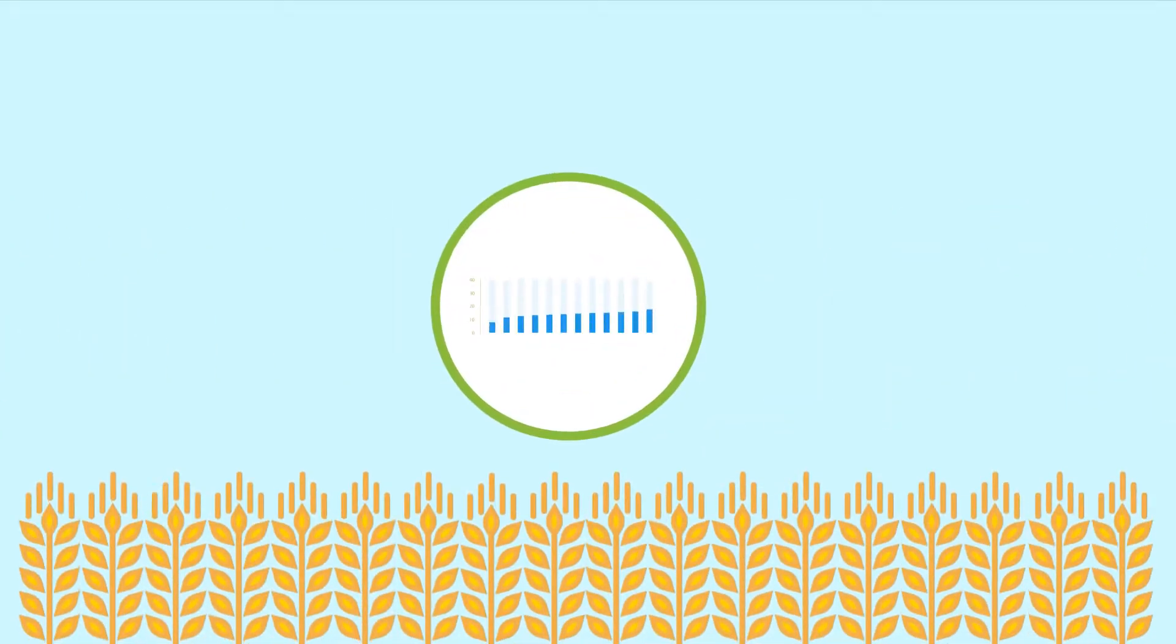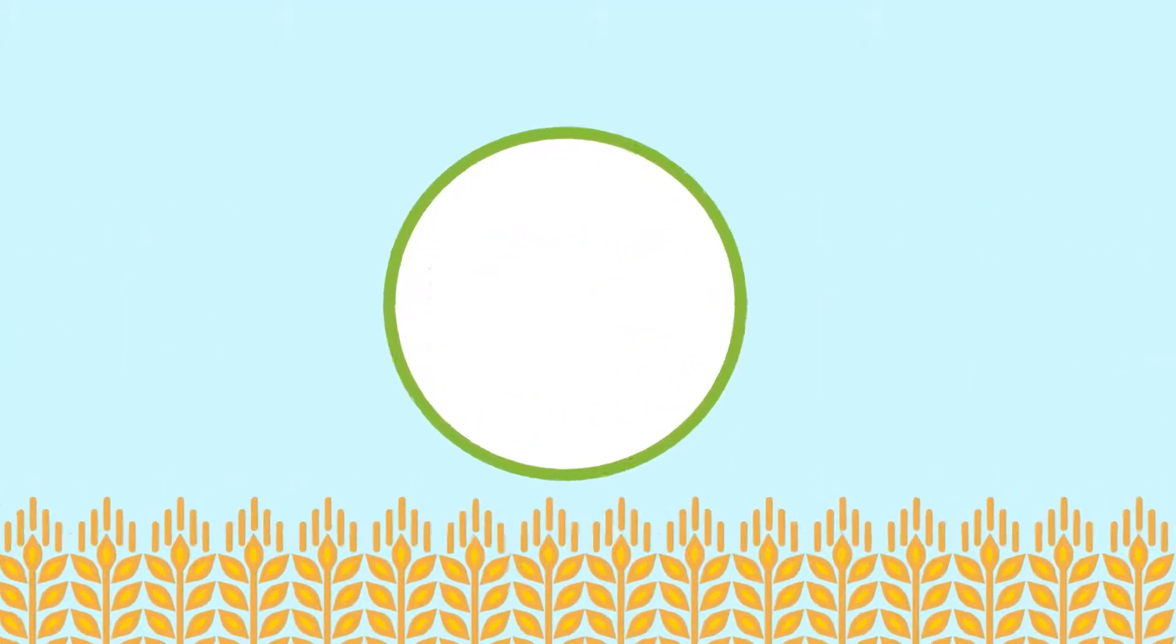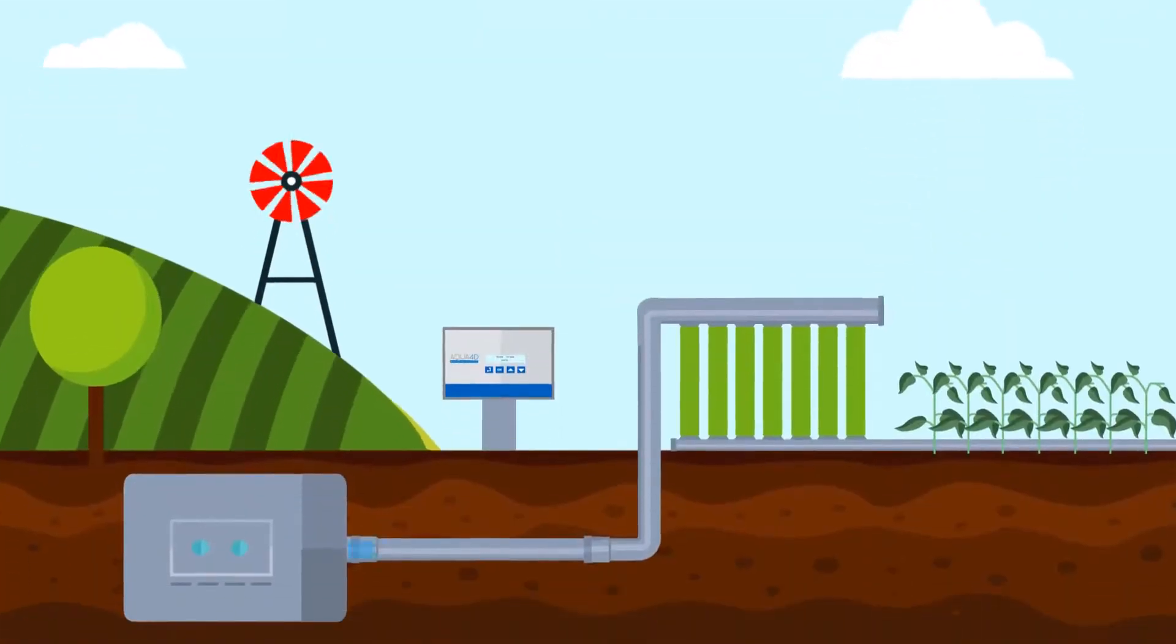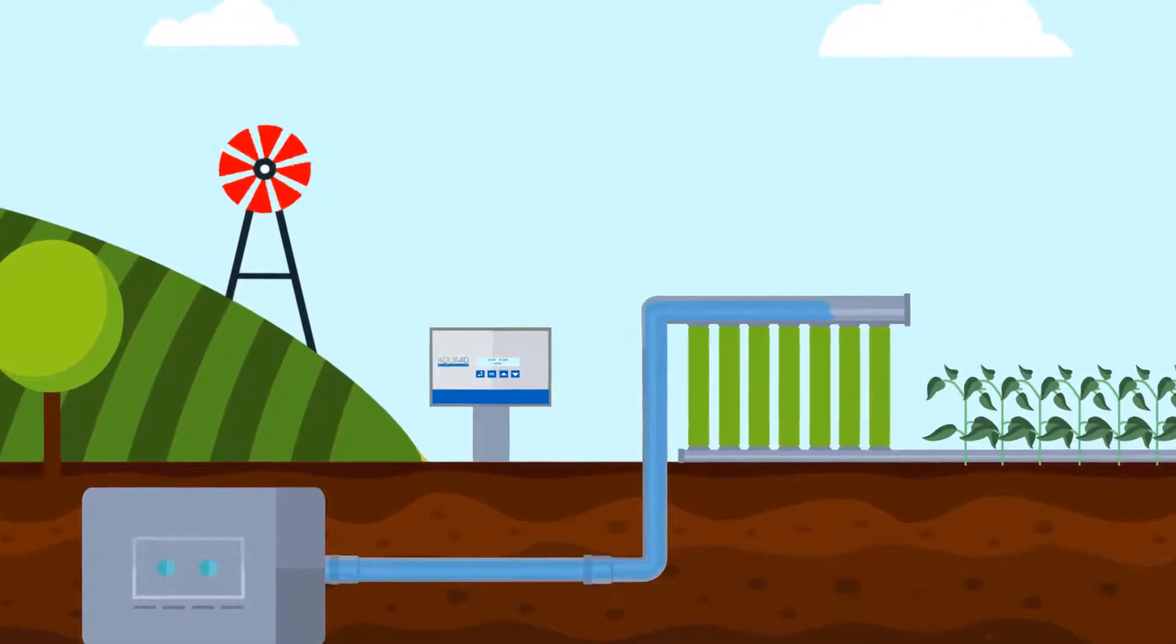The only way to ensure agricultural development is to meet that demand. Aqua 4D Water Solutions presents Swiss technology, made by Aqua 4D System, an innovative, chemical-free and eco-friendly solution for agricultural problems.